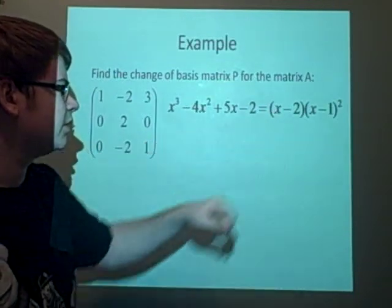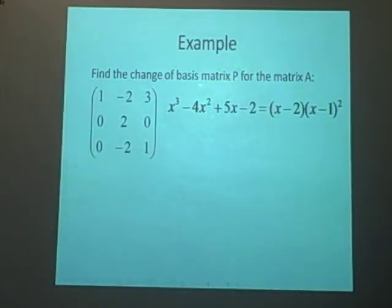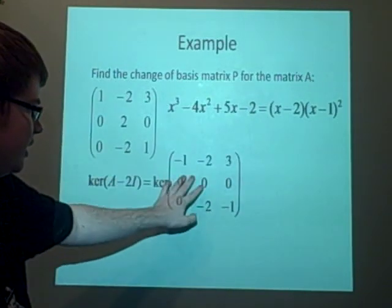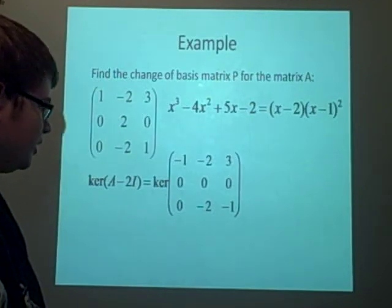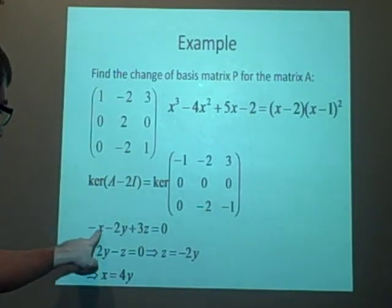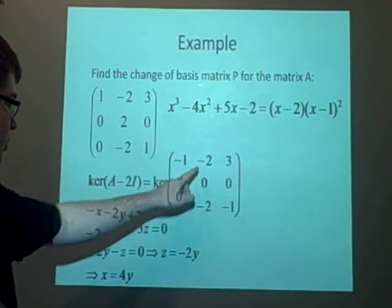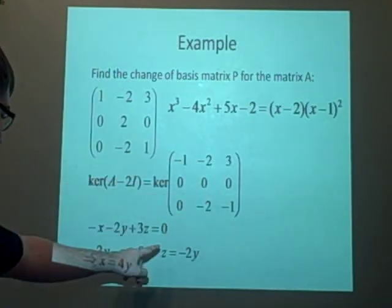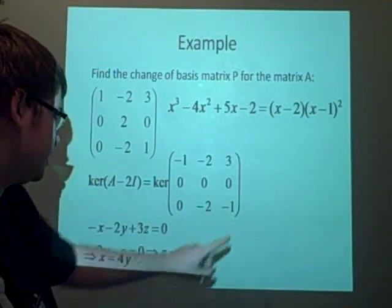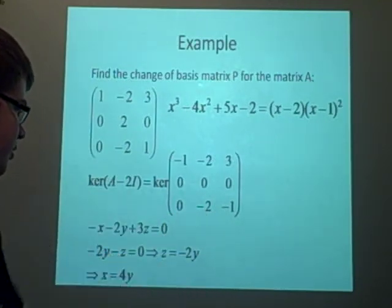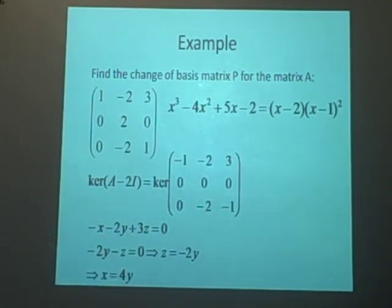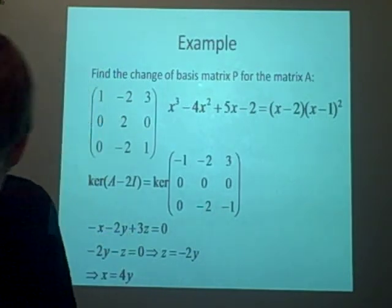First thing, we'll start with this x-2. If we find the kernel of that, so we've got the kernel of the matrix here minus 2, this gives us this here, and we can find the kernel of that, put that in the form of x, y, z here: -x - 2y + 3z equals 0, and this one as well. We can work out what z is in terms of y. z is -2y. We can put that up into here, which will give us, we can work out what x is then, and that will give us the matrix.